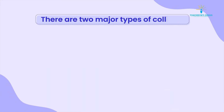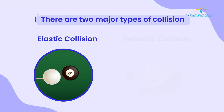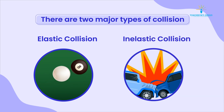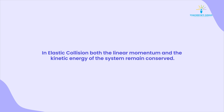There are two major types of collision: Elastic Collision and Inelastic Collision. In Elastic Collision, both the linear momentum and the kinetic energy of the system remain conserved.